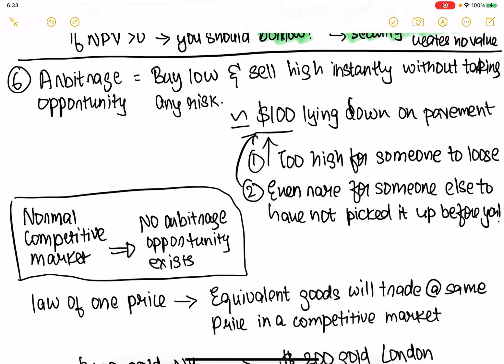Arbitrage opportunity means you can buy low in one market and sell the same quantity of the same good instantly at a higher price without taking any risks. A lot of people feel there is always an arbitrage opportunity. For example, if a stock is constantly going up, you think it will continue to go up and that it's an arbitrage opportunity — but it's actually not.